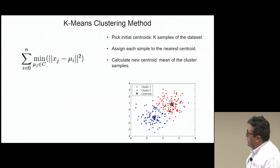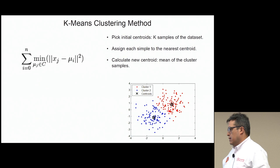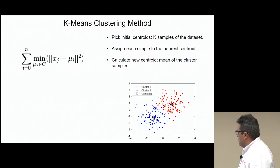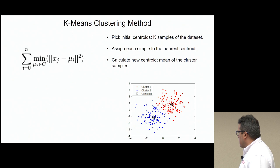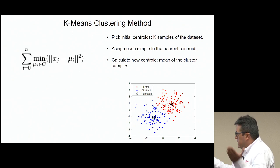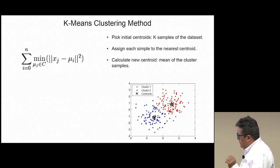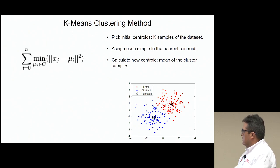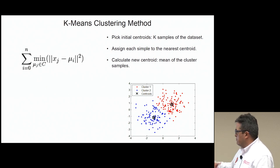The next method uses the K-means clustering method, which is a method from machine learning. This method consists in classifying data points depending on their similarity. At the beginning, it picks k samples, called centroids, from the whole space, and then builds clusters based on the distance to a centroid. Then it calculates the mean of the centroids and recalculates the clusters. It does this process iteratively until the centroids don't move anymore.